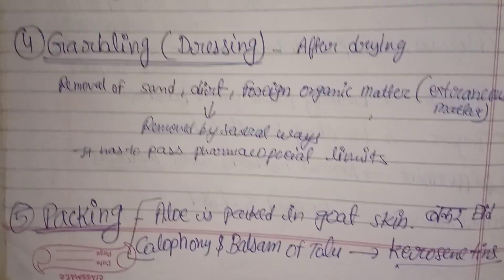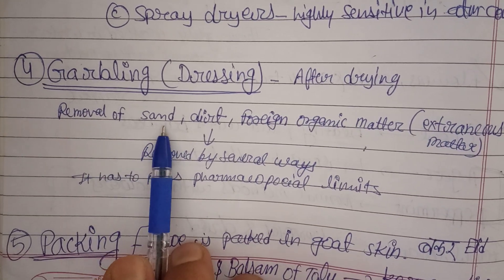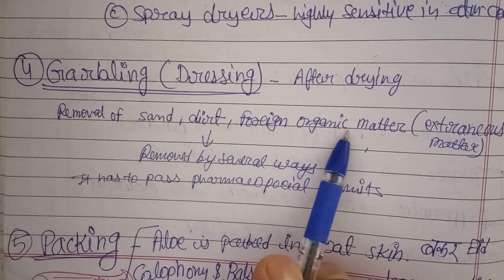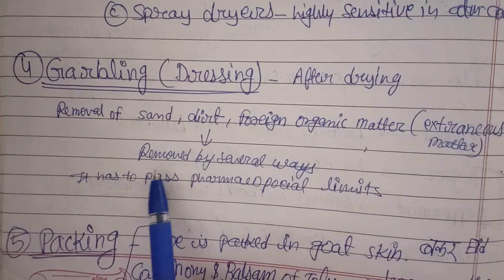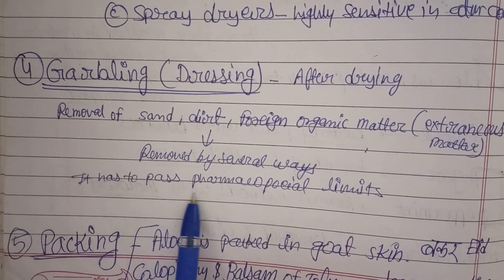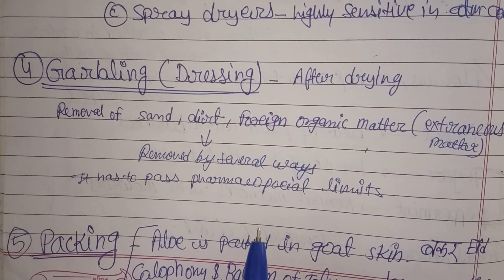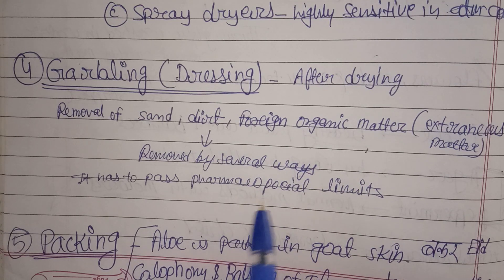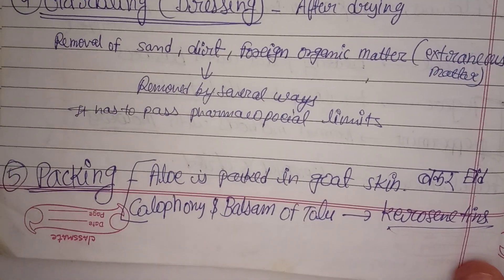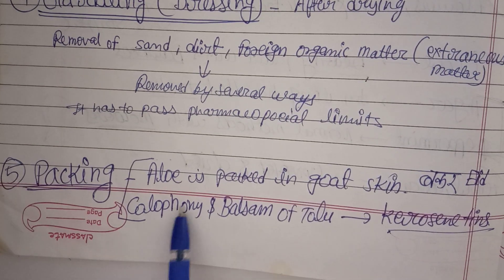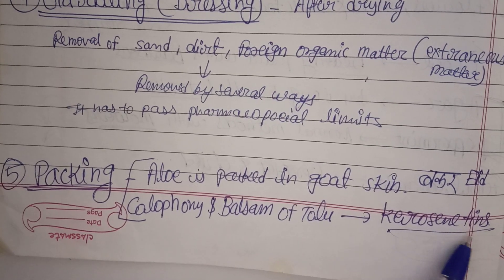For artificial drying, there are tray dryers, vacuum dryers, and spray dryers. Drugs that do not contain volatile oils can be subjected to tray drying. Drugs sensitive to high temperature should use vacuum dryers, where vacuum pressure is applied for drying. Spray dryers are used for drugs highly sensitive to atmospheric conditions, removing moisture at sufficient quantity to keep the drug safe. Garbling is the fourth important step — it means dressing after drying: removal of sand, dirt, moisture, and extraneous organic matter.